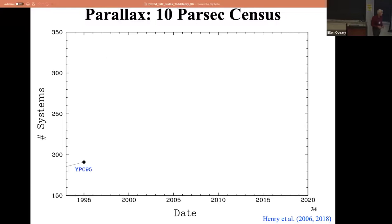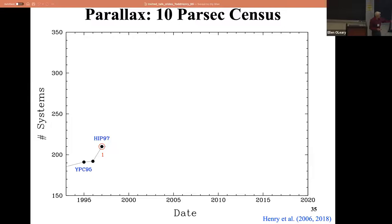What happened over these years? There was the Yale Parallax Catalog published in 1995 - the fourth version of the YPC - including all ground-based parallaxes ever measured, with 8,000 systems in it. That's why Hipparcos was such a giant leap. People worked really hard and found almost 200 star systems within 10 parsecs of the sun. Hipparcos came along and added about 18. The red dwarfs were not showing up in Hipparcos very much - Gaia has fixed all that.